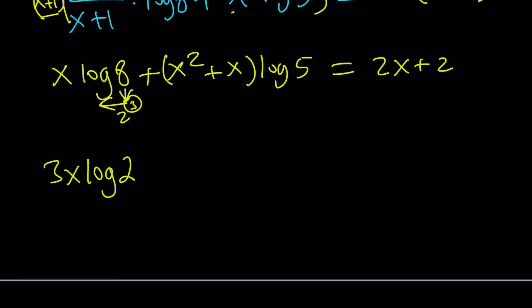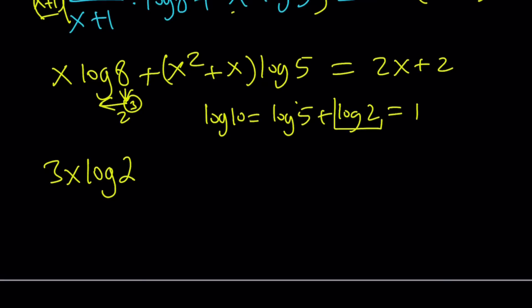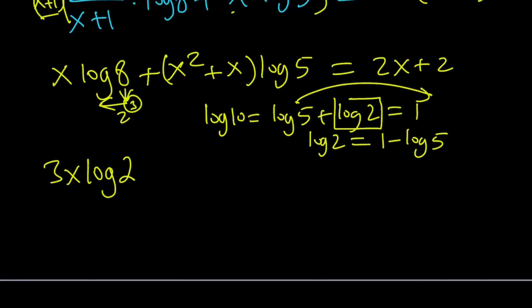Now we've got to be smart. We have log 2 and log 5, and 2 times 5 is 10. So log 10 — which can be written as log 5 plus log 2 — equals 1. I can write one in terms of the other. I want to convert log 2, so I'm going to write it as 1 minus log 5. This is a nice trick that we use a lot.